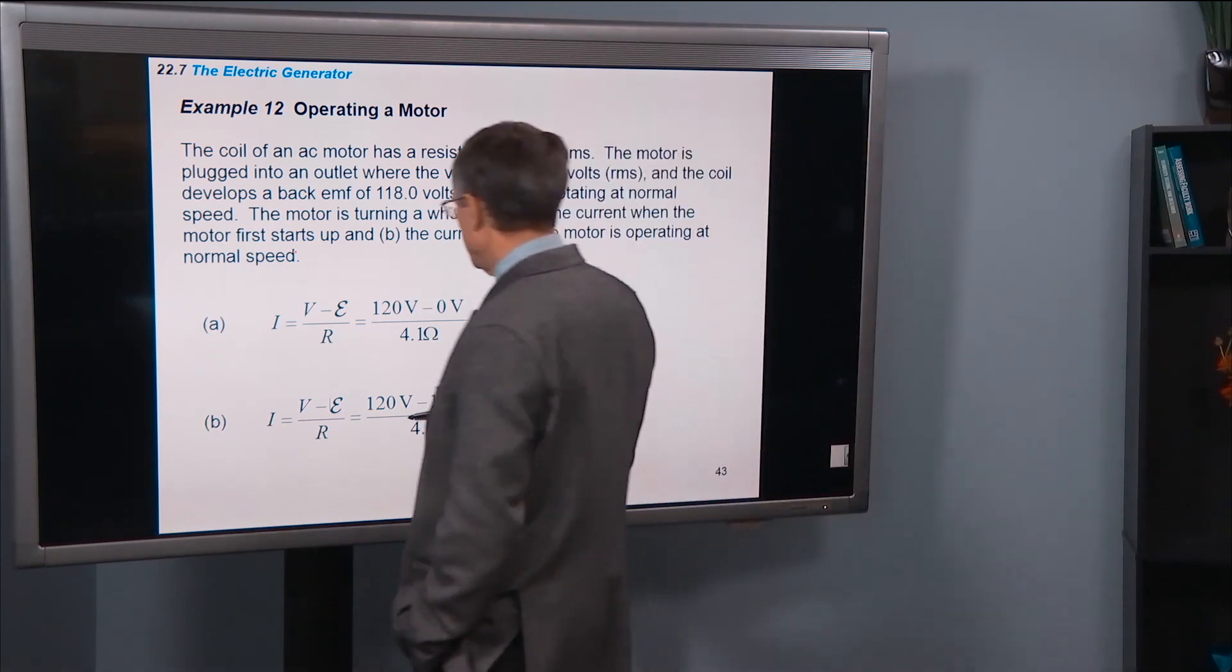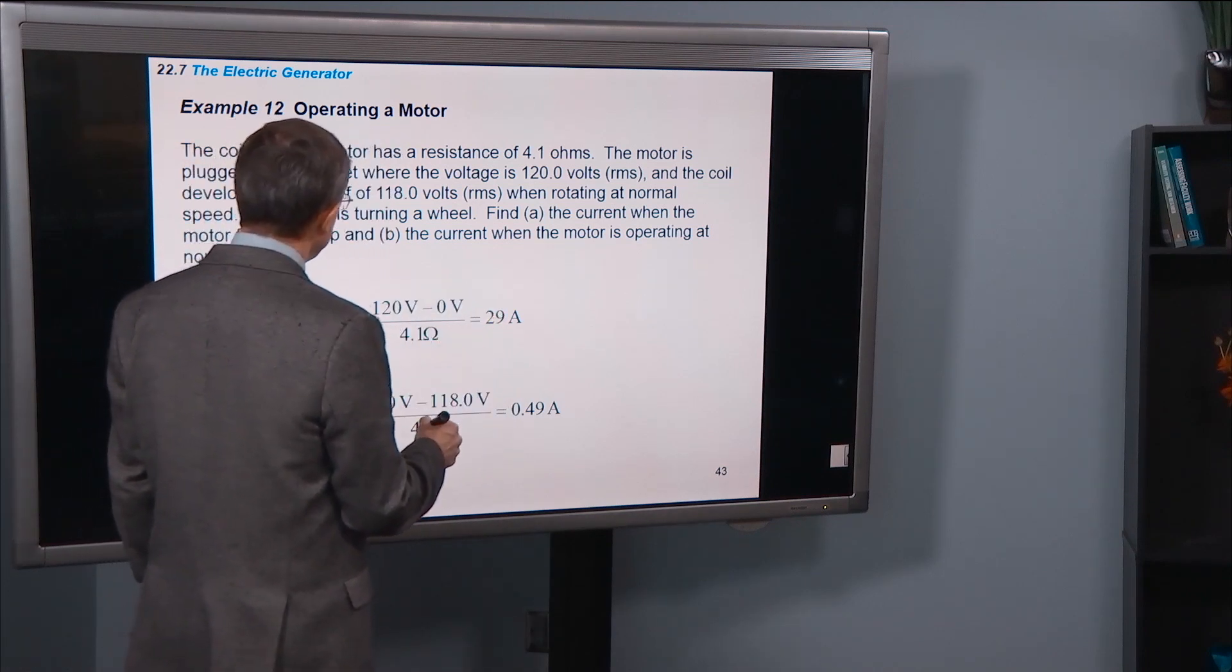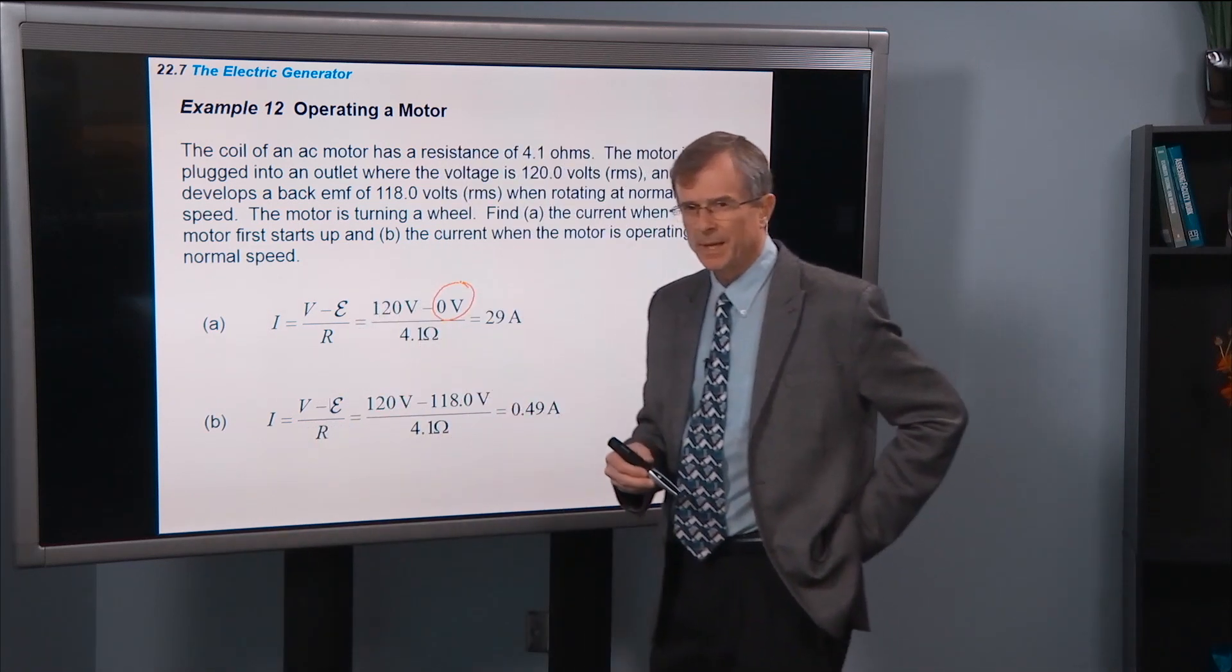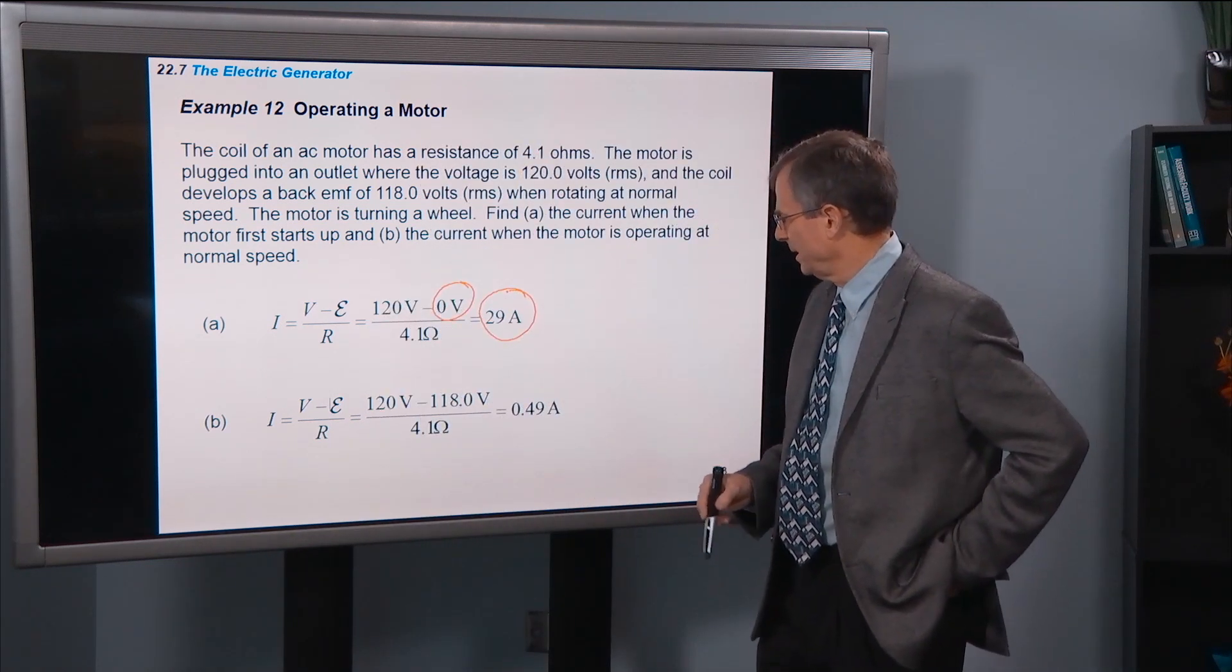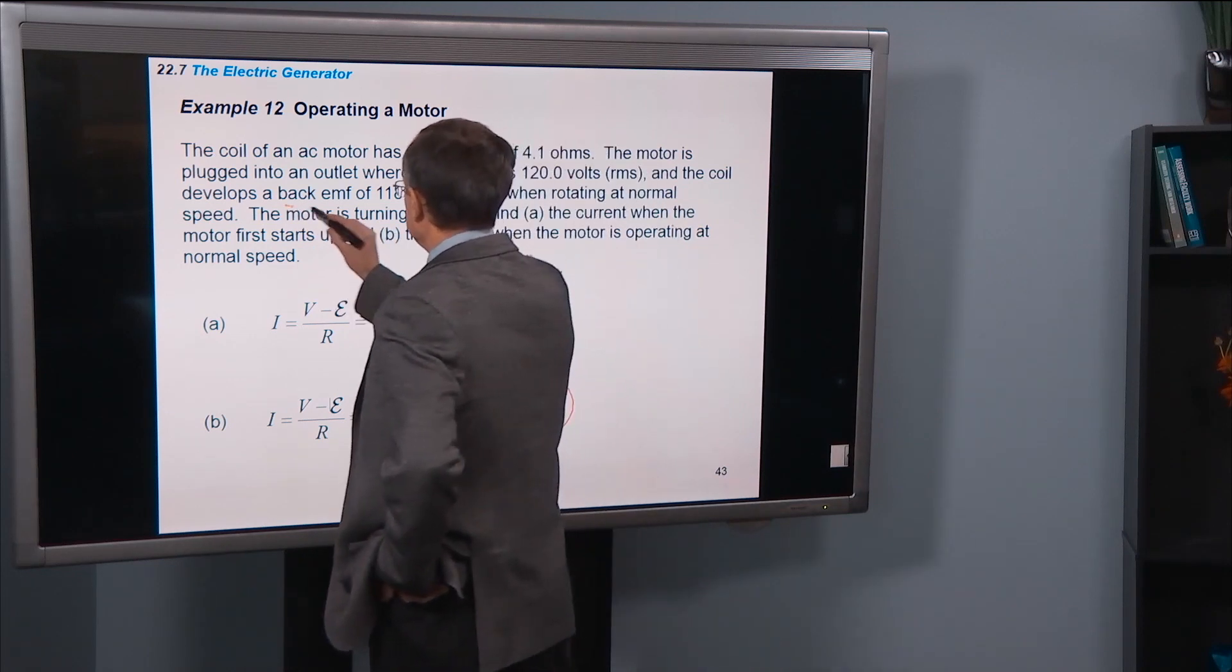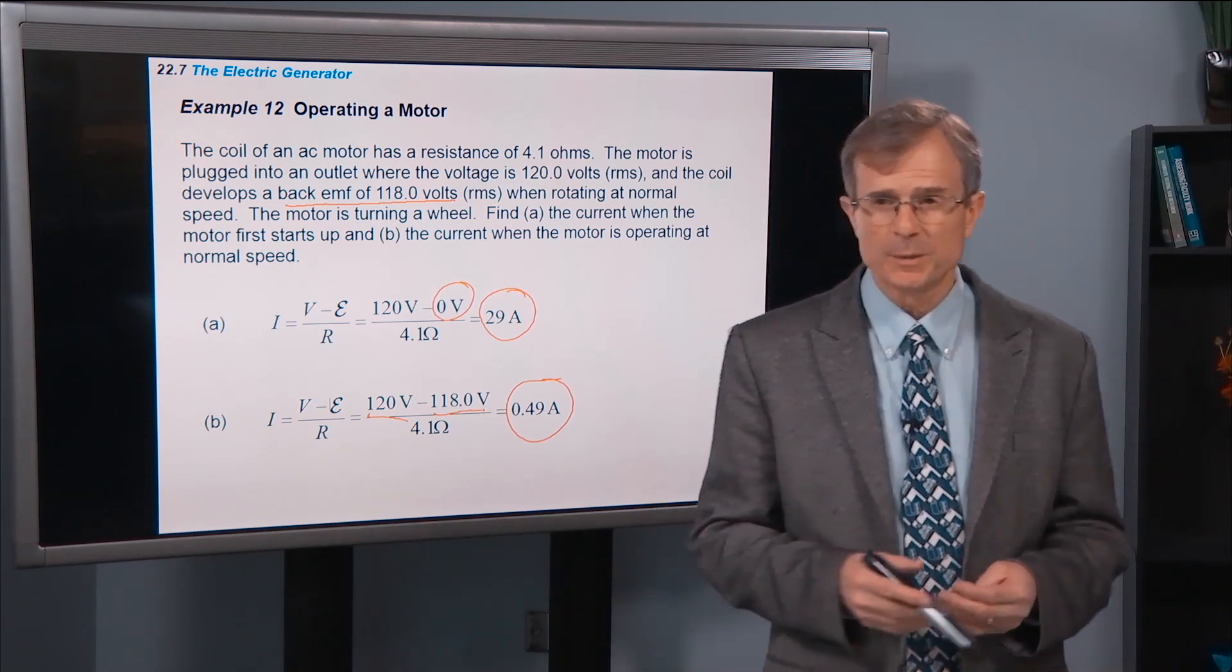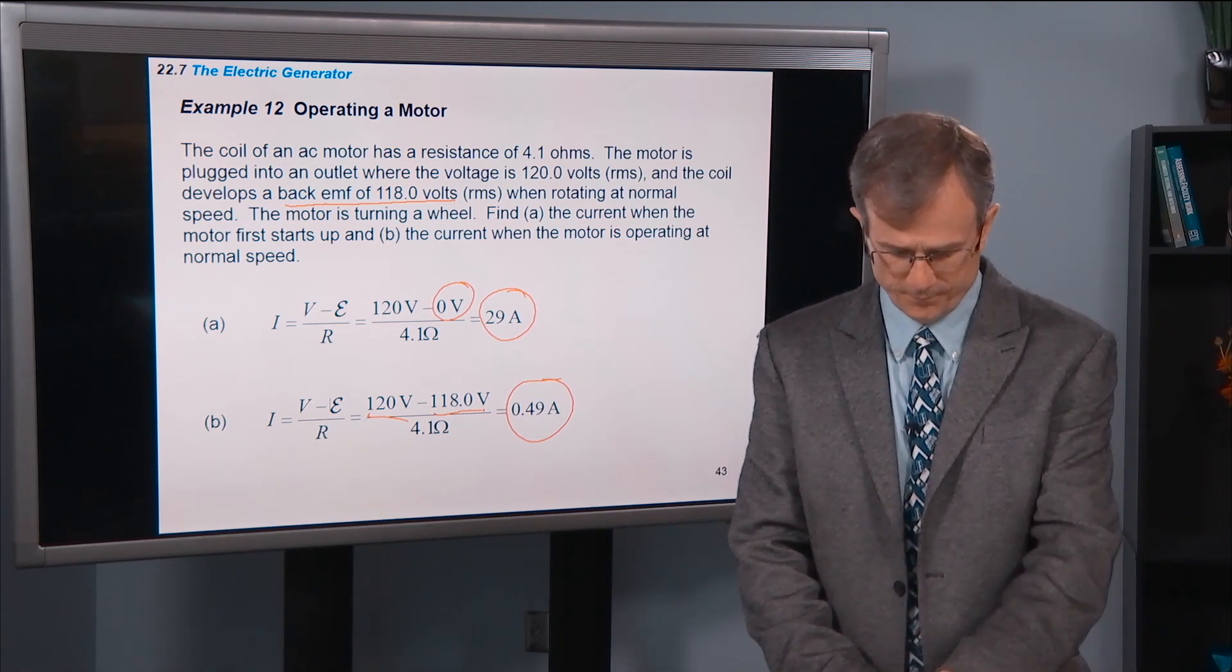Well, when it first starts up, the EMF is zero. So it hasn't yet generated that back EMF. So 120 divided by 4.1, we get 29 amps initially when just starting up. Whereas we only get a small amount of current after the coil has developed its full back EMF of 118 volts RMS. So we've got 120 minus 118, and there's really no way you can get around this with motors. You try and design around it the best you can, but that back EMF is an important consideration in the design of motors.